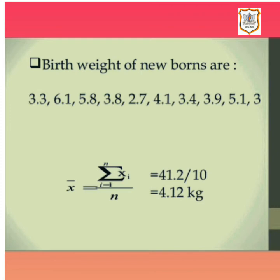The mean is 4.12 kg, so the average birth weight of a newborn baby is 4.12 kg. This data is called ungrouped data because it is not given in any table form and is not classified in a proper manner. We have now solved the sum related to ungrouped data. Let's now solve a sum related to grouped data.